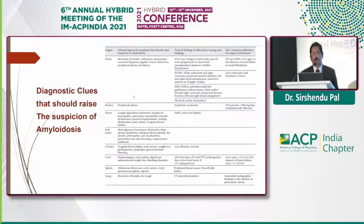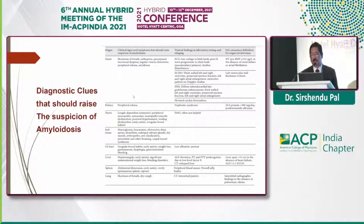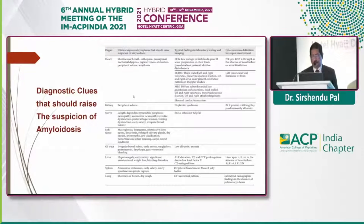Kidney involvement is reflected by proteinuria markers — 24-hour protein more than 500 mg per day, predominantly albumin — with peripheral edema and features of nephrotic syndrome. GI tract involvement is difficult to diagnose as symptoms are fluid and overlap with other diseases, but has two peculiar manifestations: low albumin and anemia. Liver involvement is shown by increased liver span of more than 15-17 cm in the absence of heart failure, elevated ALP, and increased PT and APTT due to low factor X levels. Howell-Jolly bodies in peripheral smear point to splenic involvement, and CT showing an interstitial pattern in the absence of pulmonary edema should raise suspicion of pulmonary amyloidosis.